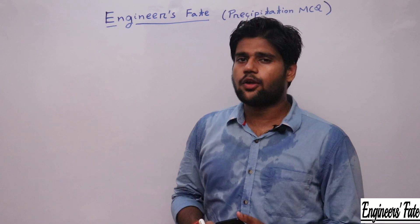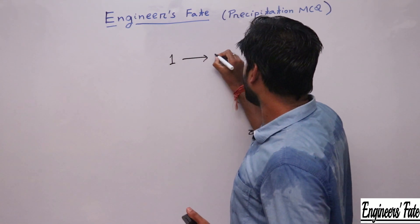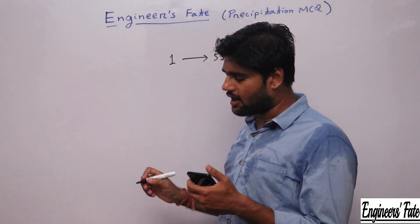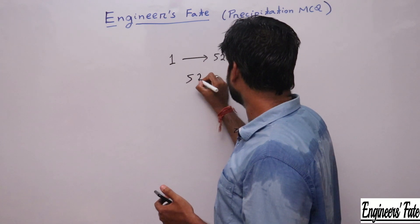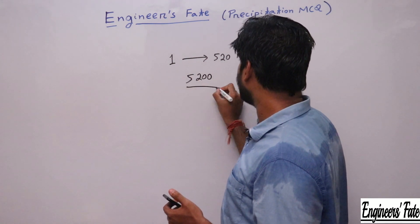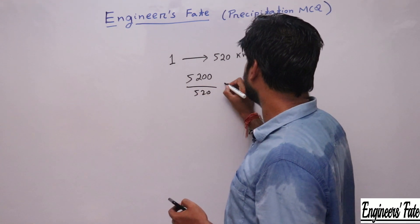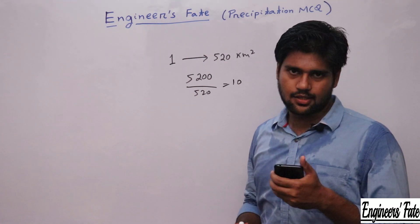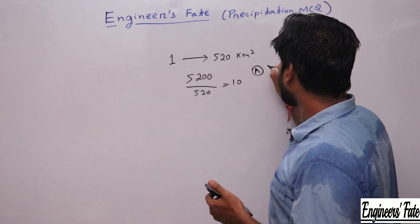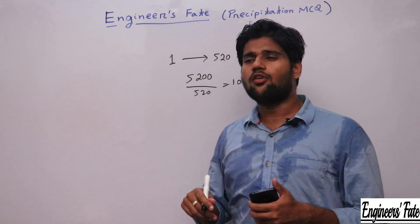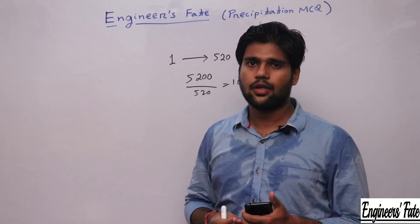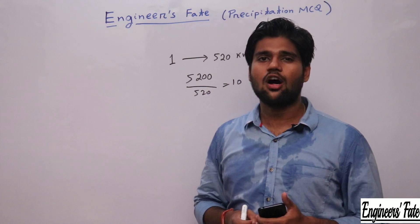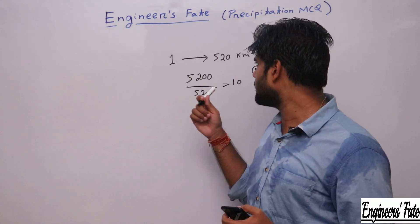We require one rain gauge station for every 520 km². In this question, he has asked for 5200 km², so we require 5200 ÷ 520 = 10 rain gauge stations. The option is A. I have discussed this in detail in my second video on quick revision of precipitation — if you haven't watched it, go watch it.